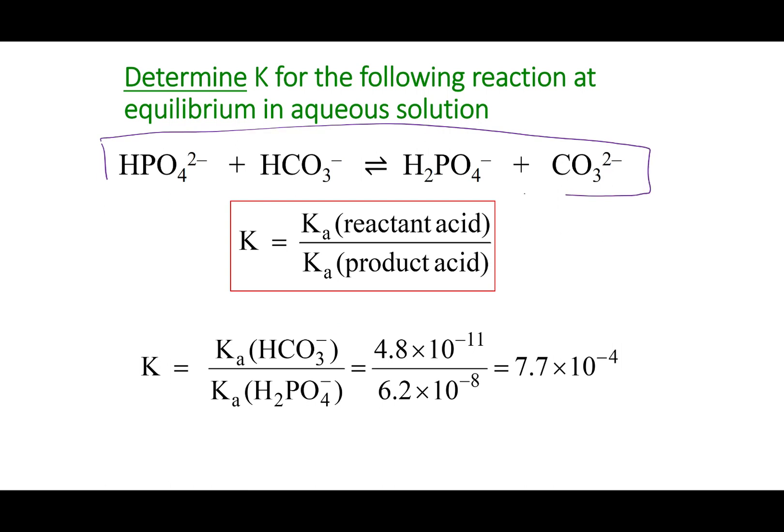Now what you can do is, given this equation right here, we can find the K for this reaction. We have acids and bases on both sides of the equilibrium. I've identified what the reactant acid is, and now I can look for the product acid, and that's going to be H2PO4 minus. I'm going to go to my Ka table. You can look up these values on your information sheet, divide one by the other, and now I get the K for this particular reaction.